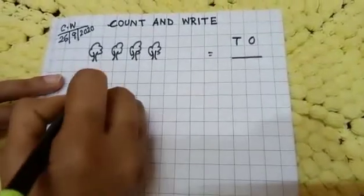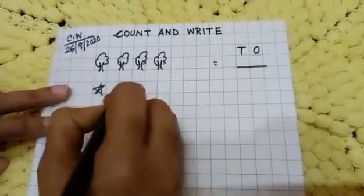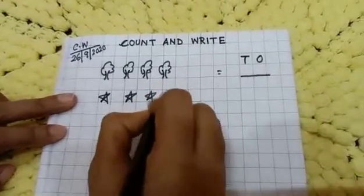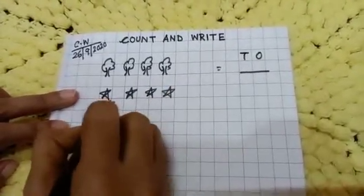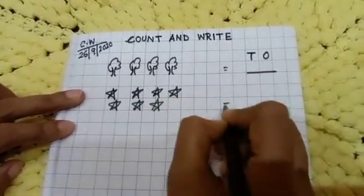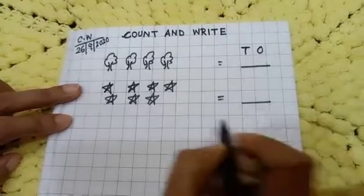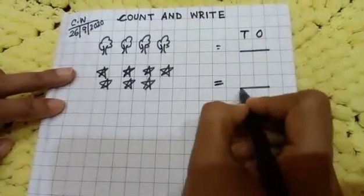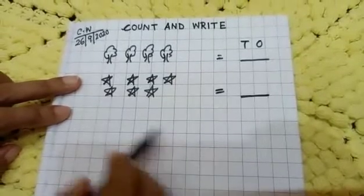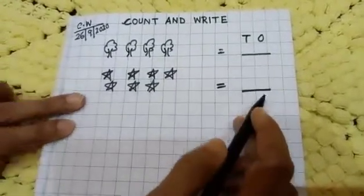The next here, here I am drawing stars. Okay, so how many trees are there? Give you an equal sign and give you one dash. So how many trees are there? You just count and write here.